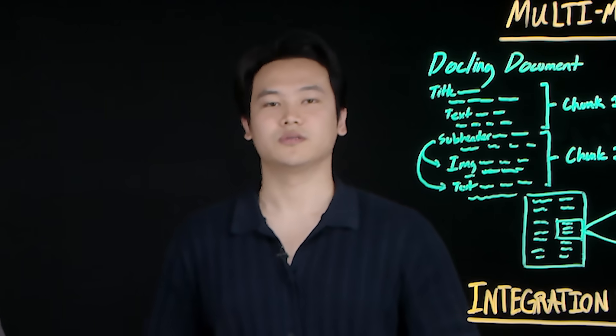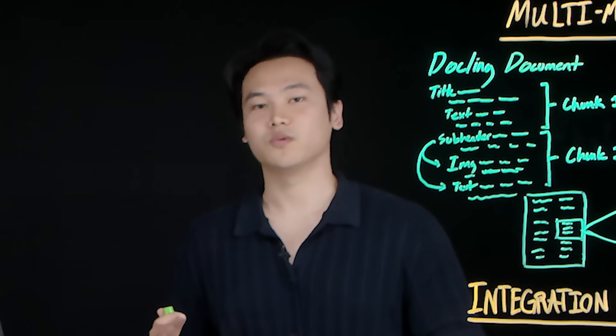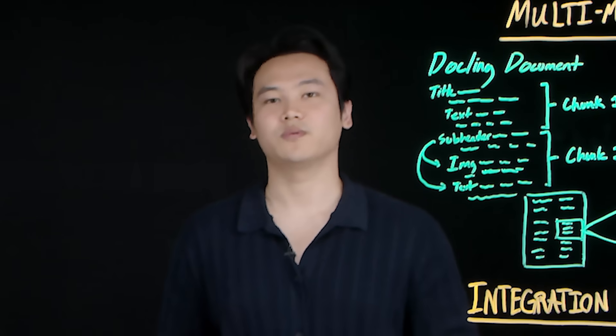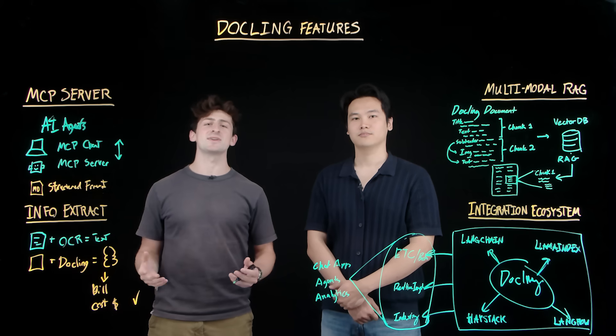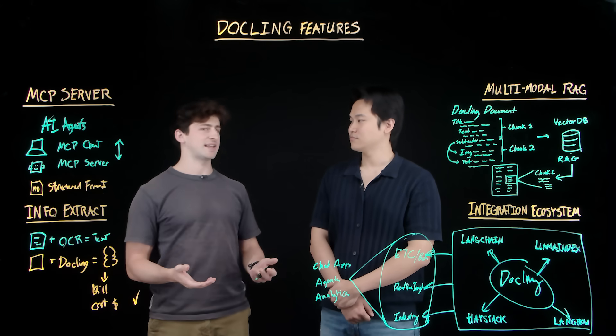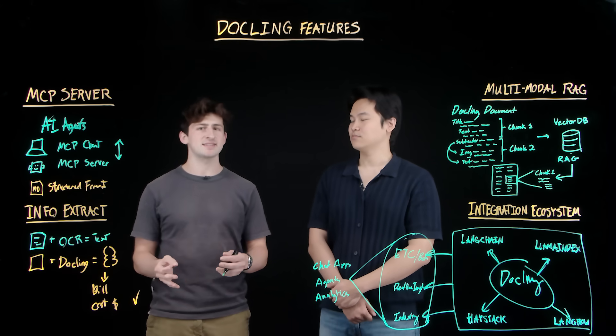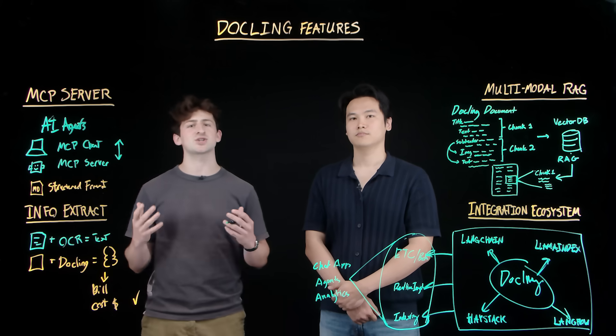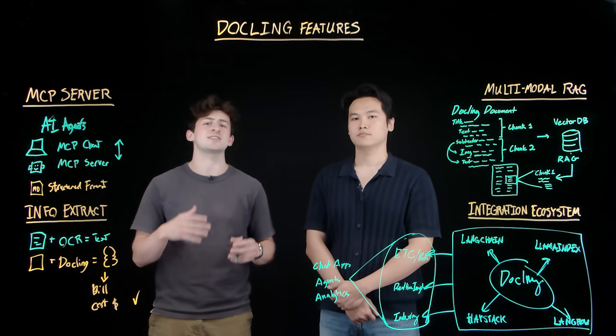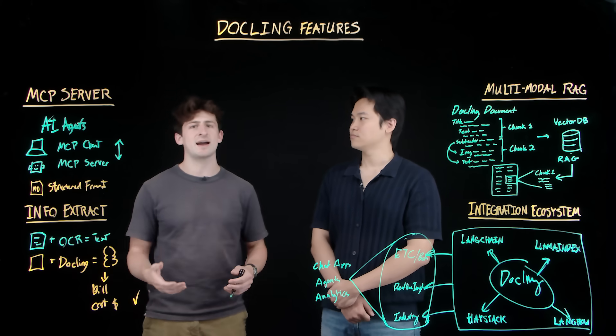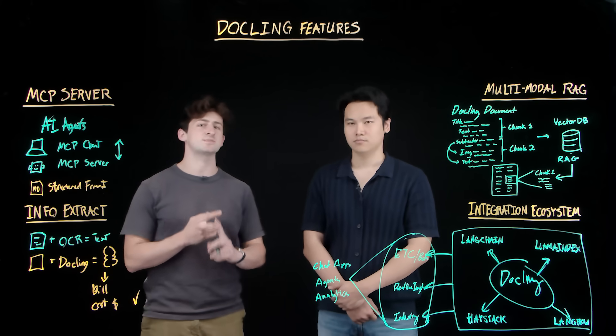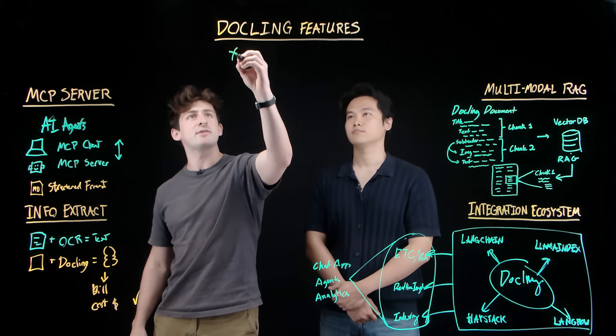Dockling's growing integration ecosystem means less glue code. Parse once, choose your framework, and keep swapping pieces as you grow. So if you're building RAG systems or AI agents that actually understand your enterprise data, Dockling is going to help make sure that your PDFs, your presentations, and more can be truly used by AI to give more accurate and transparent resources.